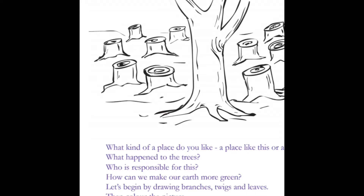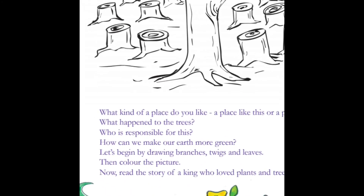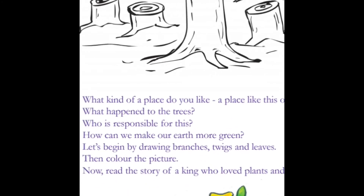How can we make our earth more green? We can plant many trees. Let us begin by planting trees, drawing branches, twigs and leaves — let's make our earth green.